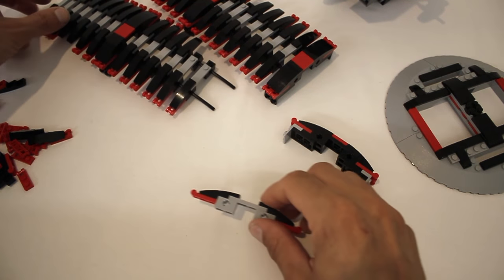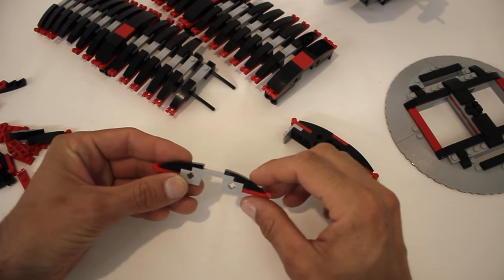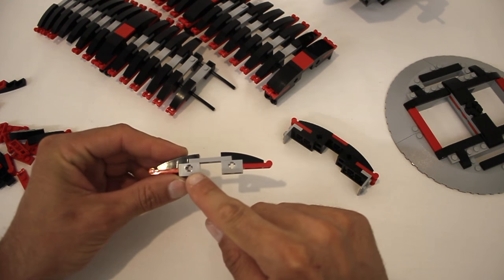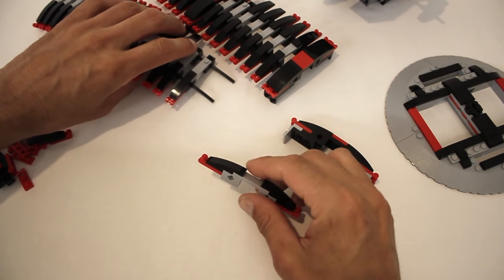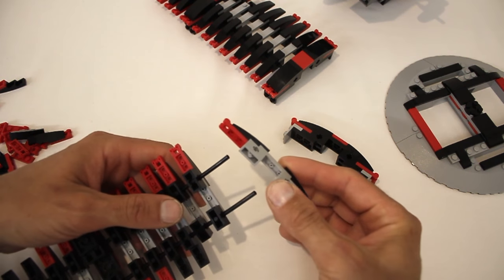Each tread of the track is built using these curved slopes. And they slide onto those flex tubes using these Technic bricks with axle holes in them.